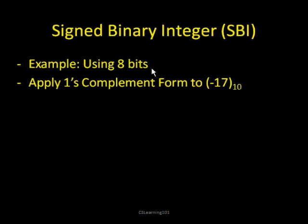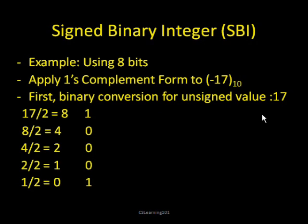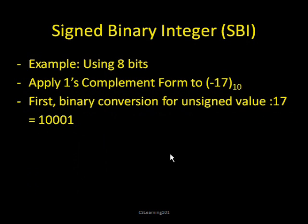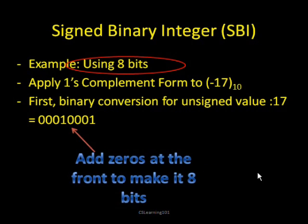We're going to keep talking about signed binary integers. Generally you would use 8 bits to represent the full number — you don't want to use a strange number of digits like 3, 5, 6, or 7. Generally 4, 8, 12, or 16 are used, so we're going to use 8. Now, apply the 1's complement form to represent negative 17. First, find out what positive 17 would be in binary. If you do that, you find the binary number for 17 is 10001. Remember that we're using 8 bits, so you have to convert it to 8 bits by adding zeros at the front.